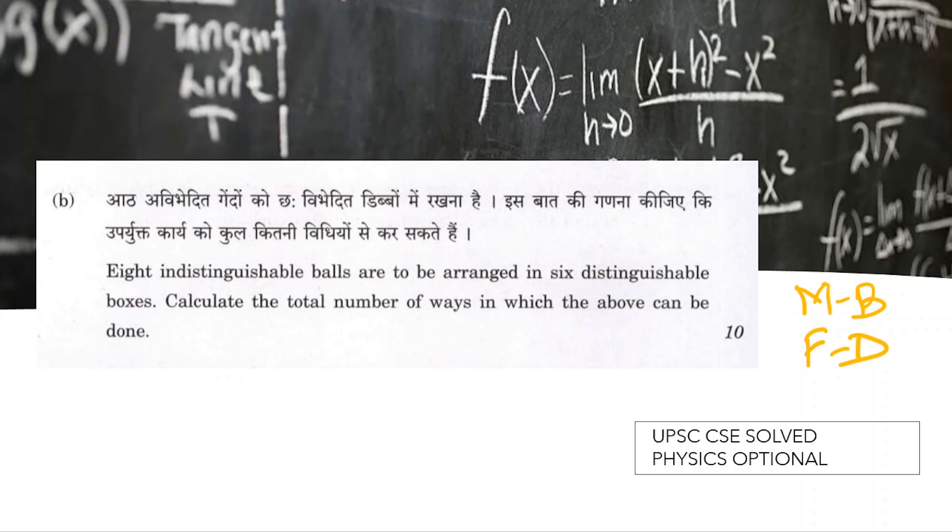What are the major differences between these statistics and how do we know which statistics we are going to use in this question? First of all, we are given indistinguishable particles.